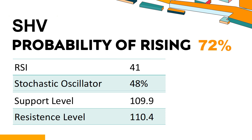In this case, an oversold signal may indicate that a stock is hitting a temporary bottom, but it doesn't necessarily mean that the trend will reverse immediately. Trend Outlook: The probability of SHV's share price rising is 72%. Combining multiple technical analysis indicators, SHV has two bullish signals and six bearish signals.